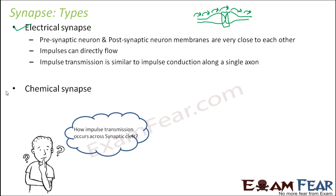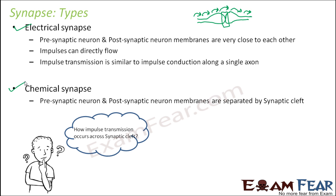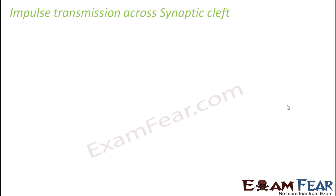In the chemical synapse, the pre-synaptic and post-synaptic neuron membranes are separated by the synaptic cleft — there is a gap. So the impulse actually needs to cross that gap, and that is the challenge. We now have to understand the process of impulse transmission across the synaptic cleft, so let us spend some time understanding this.